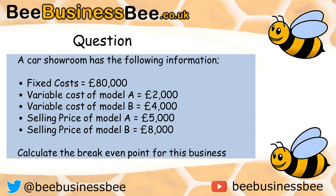Now have a go yourself. A car showroom has the following information: fixed costs of £80,000, variable cost of Model A being £2,000 and variable cost of Model B being £4,000, selling price of Model A being £5,000 and selling price of Model B being £8,000. You are going to have to find two different averages before you can use the breakeven formula. Pause the video now and then unpause to see the answer.